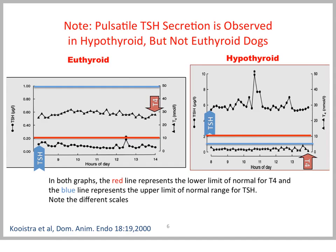I'd like to show you some data from a study. When an animal is euthyroid — seen on the left-hand side — T4 and TSH are both in the normal range with little fluctuation over the day. But when an animal becomes hypothyroid, as seen on the right-hand side, lack of negative feedback makes TSH high. We start to see pulses of TSH, suggesting the potential for pulsatile secretion particularly when an animal is severely hypothyroid.